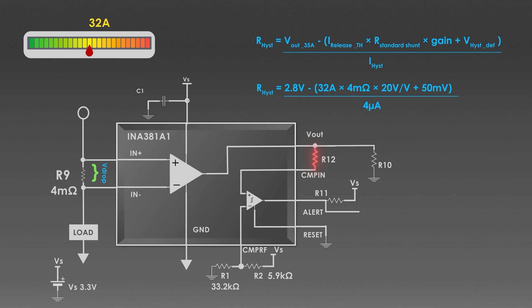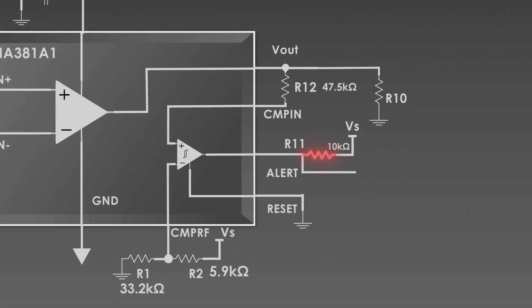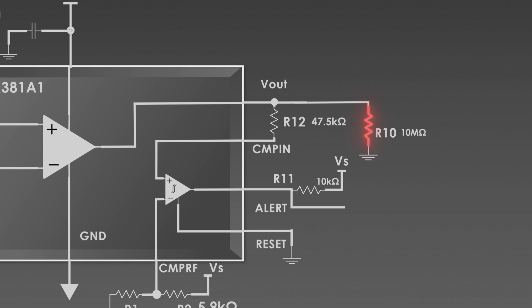So, from the calculations, we get the value of 47.5 kilohm resistance. The alert pin requires a pull-up resistor. So, we will add R11 as 10 kilohms to generate a valid high level signal. And keep this R10 as 10 megaohms to prevent any leakage.